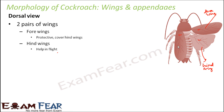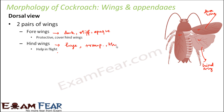Generally, the forewings are dark, stiff, and opaque — you cannot see through them. The hind wings are quite large compared to the forewings, but they are transparent and thin. The hind wings help in flight, while the forewings help in protection by covering the hind wings. So forewings are dark and stiff, and hind wings are light, helping the cockroach to fly.